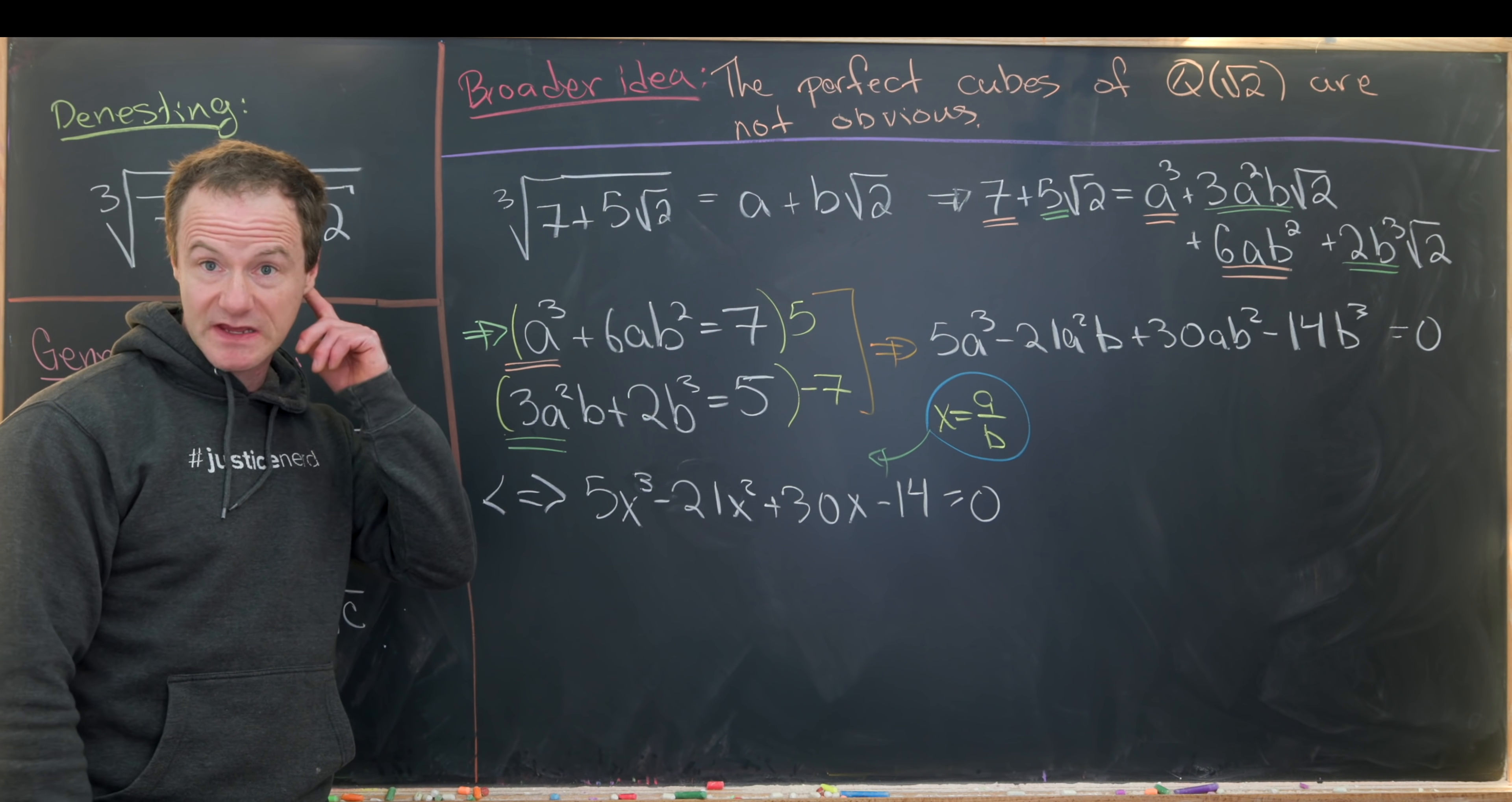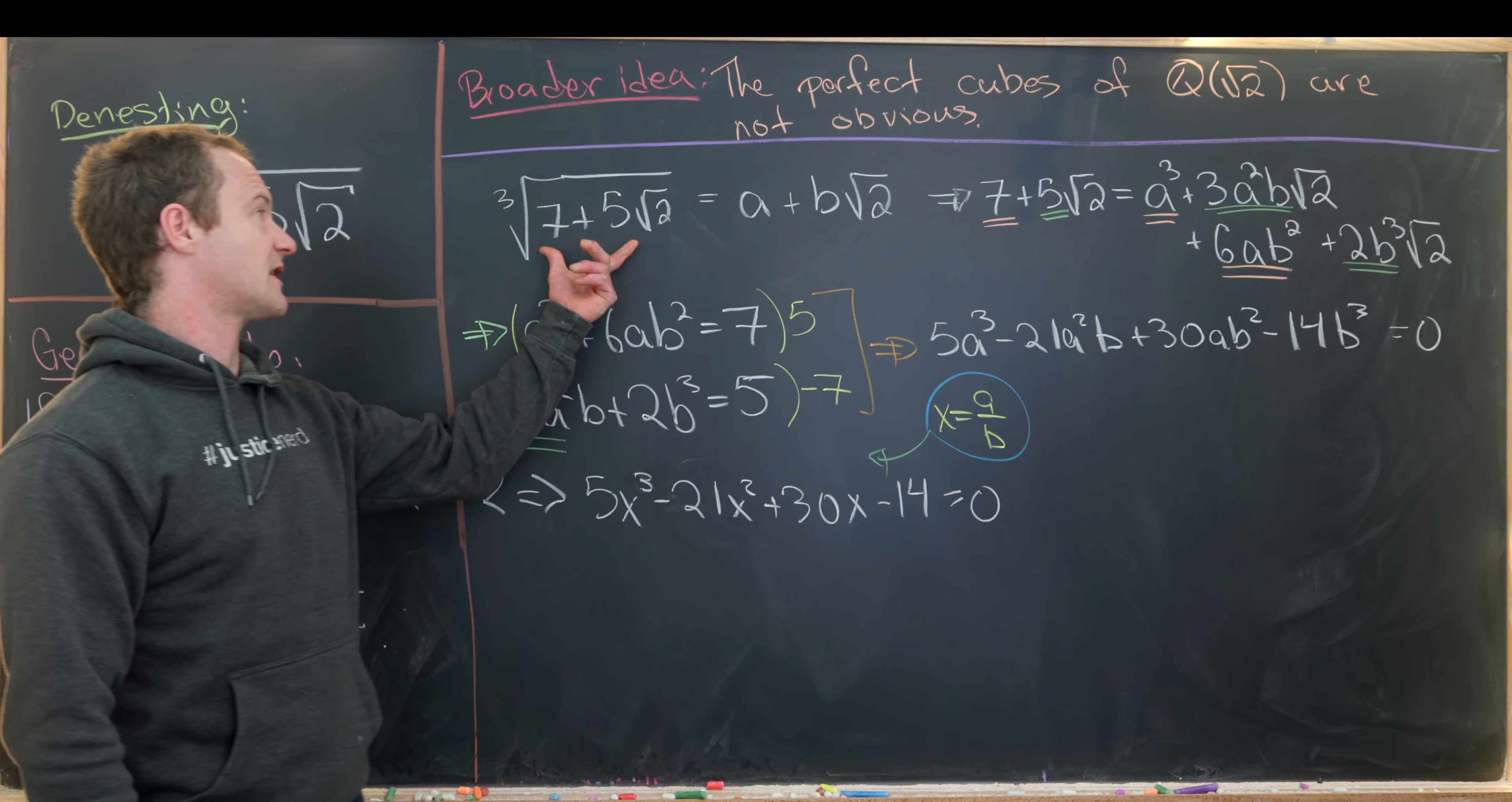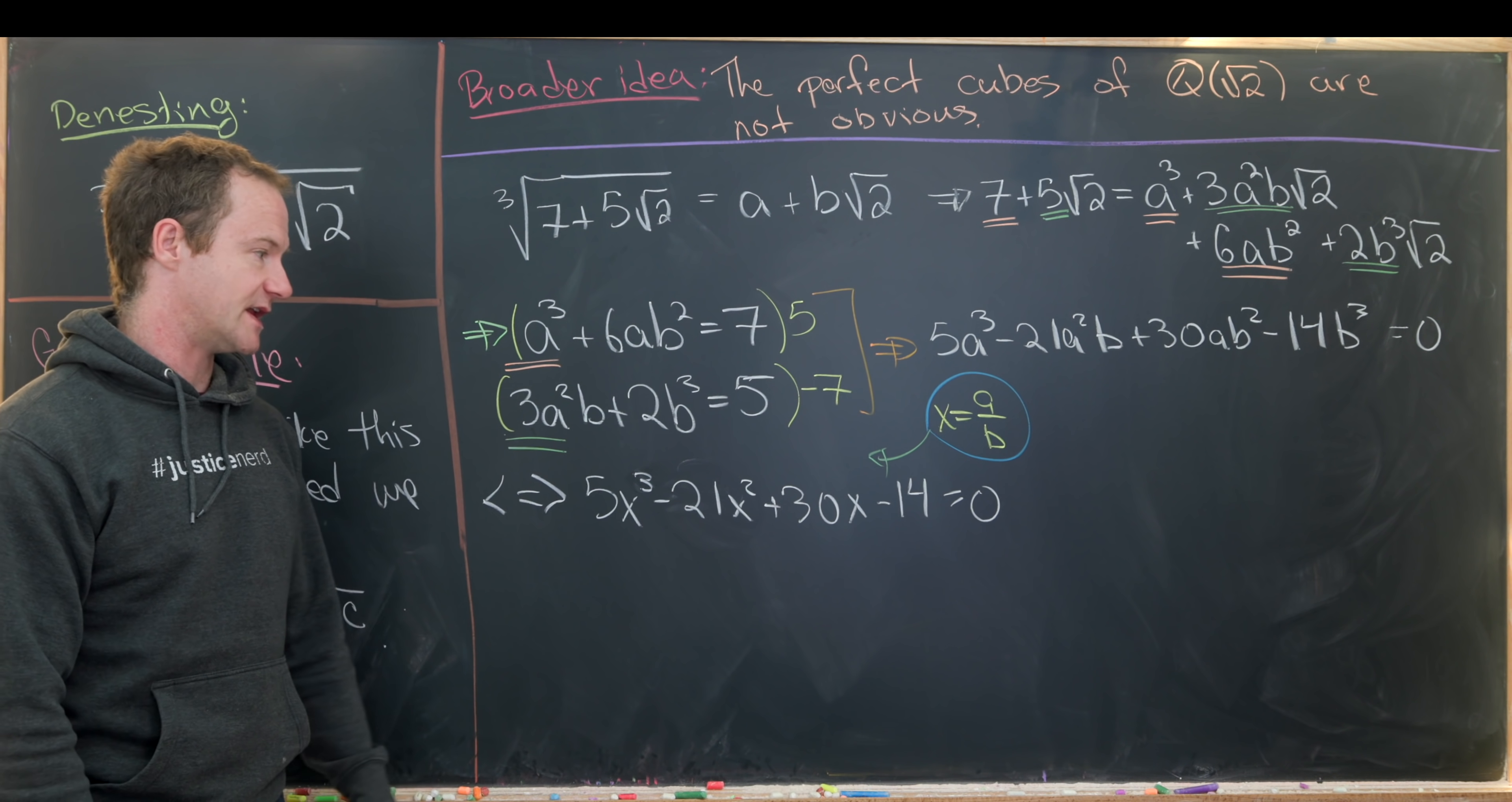You might say well what happens if b is equal to zero but b is not equal to zero. Because it's fairly easy to show that this is an irrational number. Which means it has an irrational component over here on the right hand side.